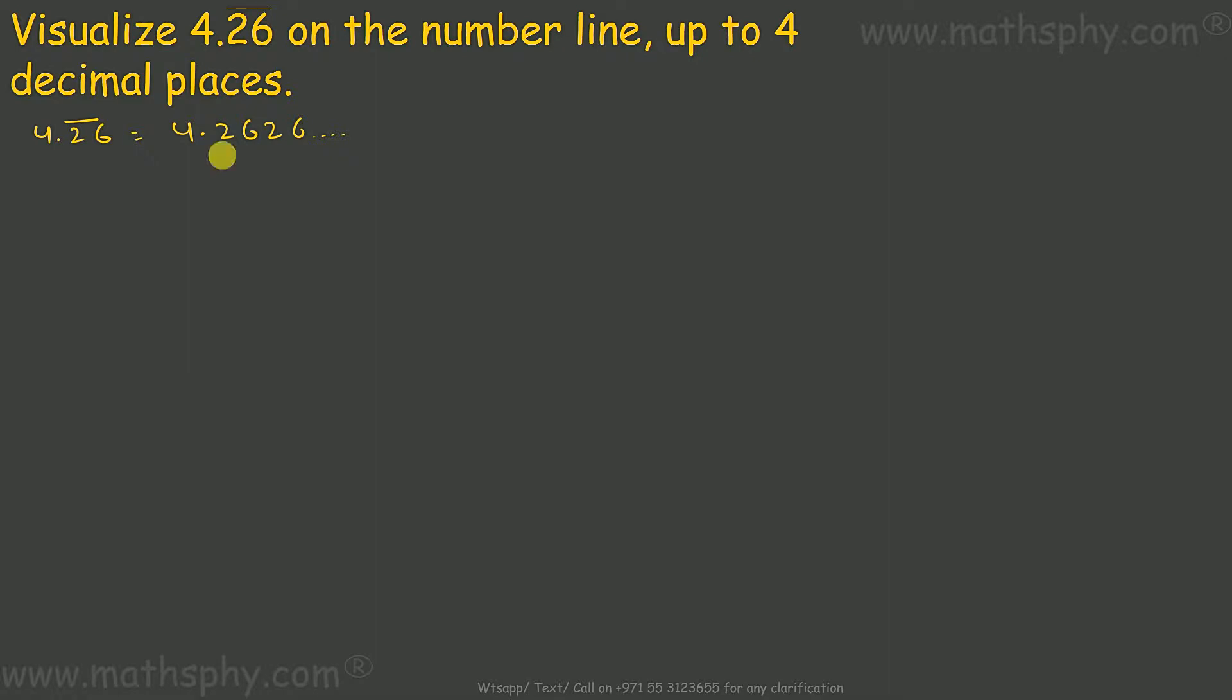Now, I know 4.2626 is between 4.2 and 4.3. Let's take a line which is 4.2 and goes up till 4.3. So this will be 4.21, 4.22, 4.23.